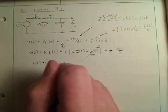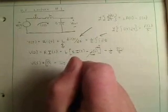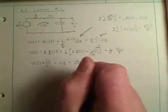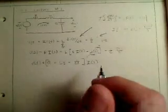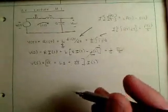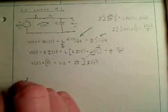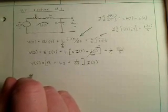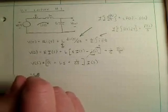Plus LS plus 1 over CS times I of s. To make this a little bit cleaner, I'm going to multiply both sides by C of S. So I'm going to get C times S times V of S.